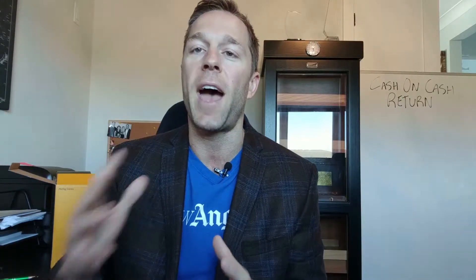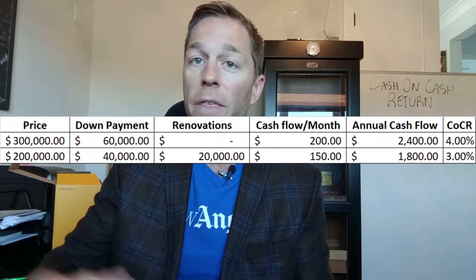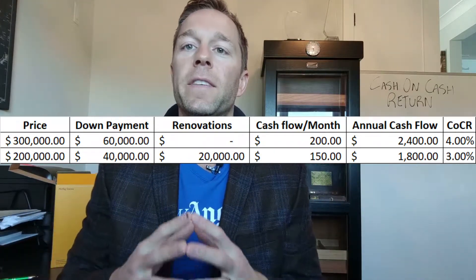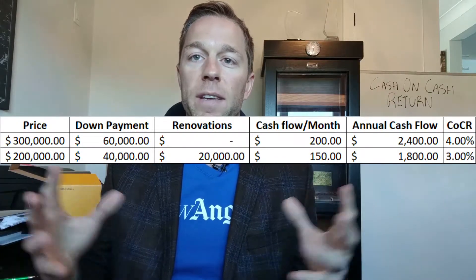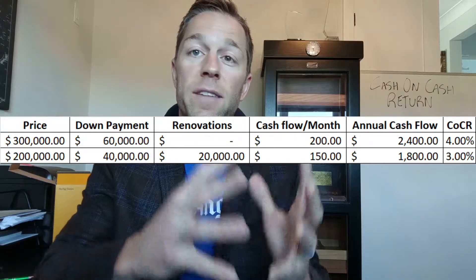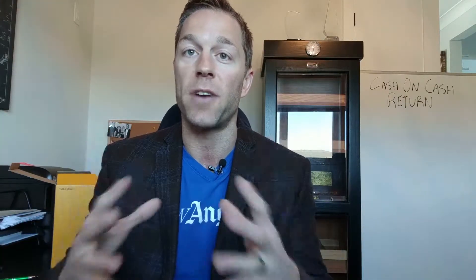But when applying the cash-on-cash return calculation — where you take the annual cash flow and divide it by the cash investment you made into the property — you can see, as shown on screen, that the property cash-flowing only $75 per month is the better investment. The percentage of cash flow to your investment is higher: four and a half percent for the $200,000 property compared to four percent for the $300,000 property. This is why you can't just use a simple benchmark of $100 cash flow per unit.